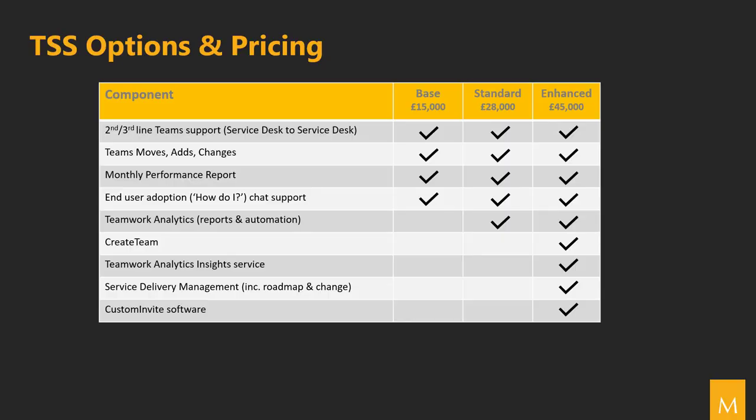Team Success Service comes in three levels: Base, Standard and Enhanced. Base offers you second and third line team support, moves, adds and changes, a monthly performance report, and end-user how-do-I chat support.